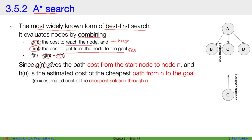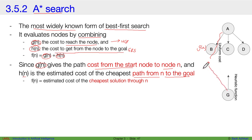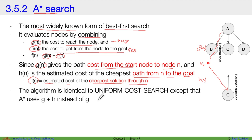g(n) gives the path cost from the start node to any intermediate node n, and h(n) is the estimated cost of the cheapest path from node n to the goal. Combining these two, f(n) gives you the estimated cost of the cheapest solution through n — the best solution through this node. Overall the algorithm is identical to uniform cost search, except that A* uses g(n) + h(n) instead of just g(n).